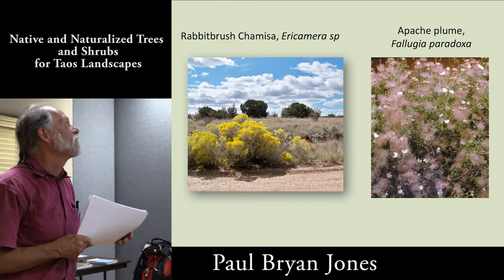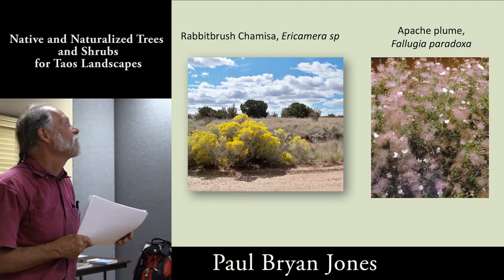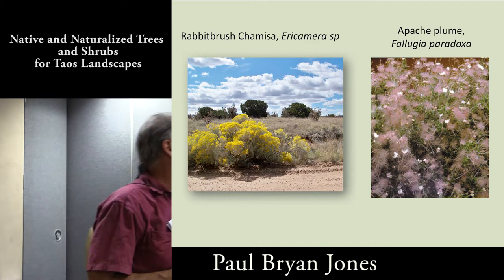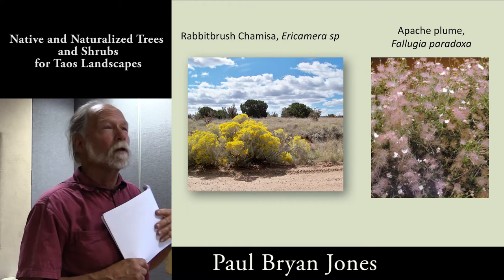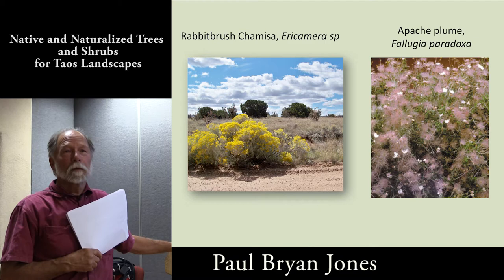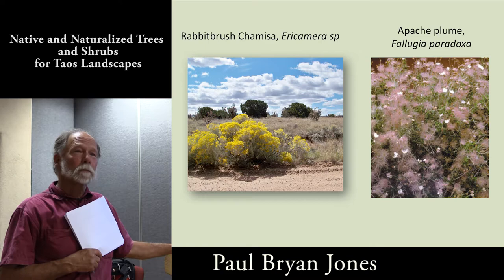Rubber rabbitbrush — we used to call it rubber rabbit brush in the field and see if we could say that three times fast. There are several species of that. Apache plume is one of my favorites — I see them growing out of rocks, a really unique, strong shrub. What's nice is they'll have a flush of white blooms and then go to these pink-tipped seeds, then keep blooming all summer. They're wonderful backlit by the setting sun — just spectacular.